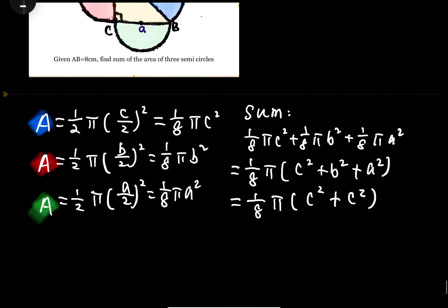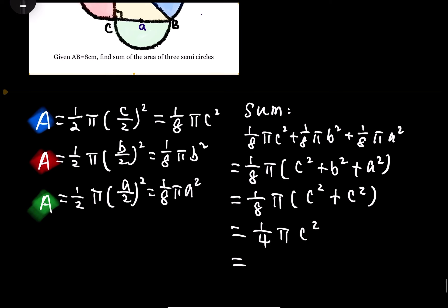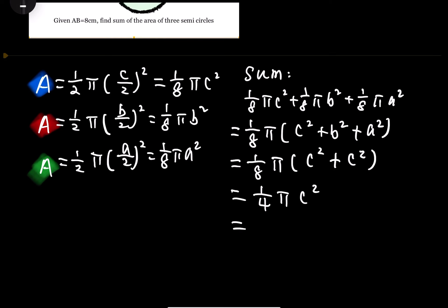The 2c squared simplified with 1/8 becomes 1/4, so we have 1/4 π c squared. Now we're ready to substitute c as 8 into the expression. This becomes 1/4 times π times 8 squared, which is 1/4 times π times 64.